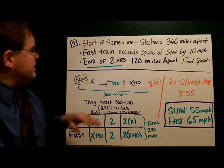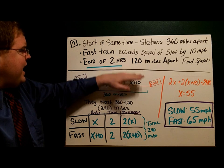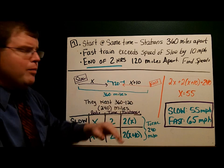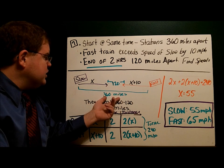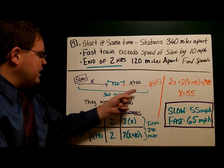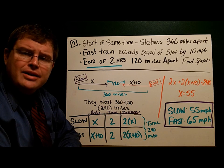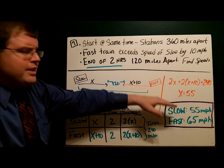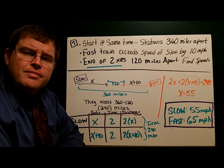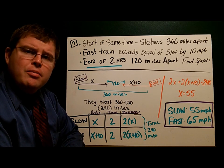Notice what we did. We took the information we had. The picture was very helpful to see the amount I still had to go, so I could subtract that out and see they'd gone 240 miles combined. Fill in my table, write my equation, and solve. Let's take a look at one more example.